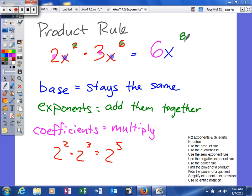It should make sense because x squared is really x times x, and this would be six x's. So when you multiply them together, two and six x's will give us a total of eight x's.